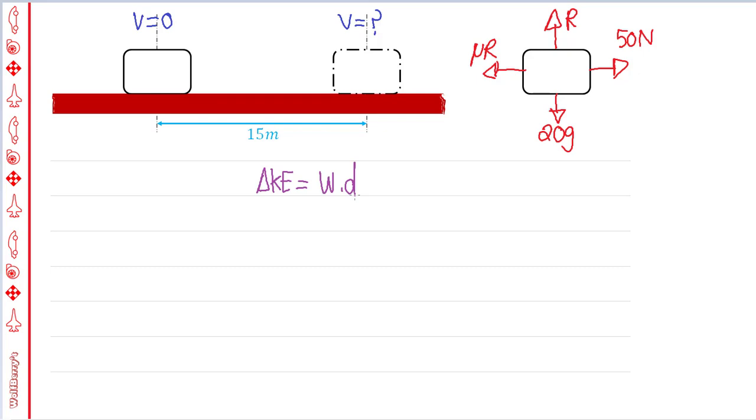The work energy principle states that the change in kinetic energy of a system, a particle or rigid body, is equal to the work done by that particle. So changing kinetic energy is half m, open bracket, v squared minus u squared, is equal to the work done is the integration of the net force, integration of f net with respect to x between your maximum displacement and your initial starting point.